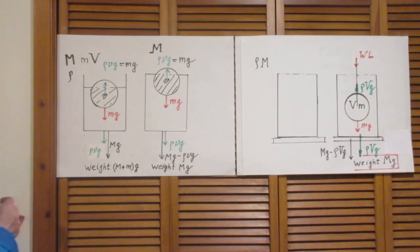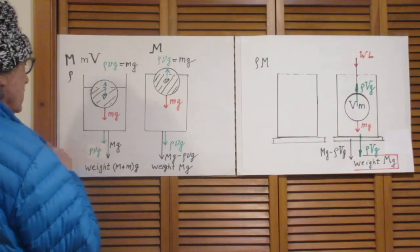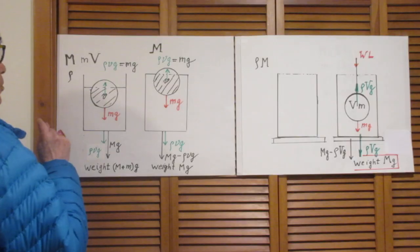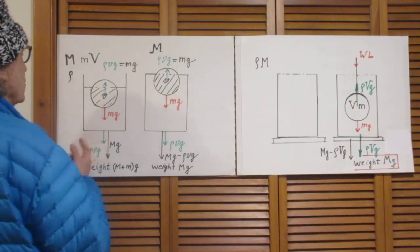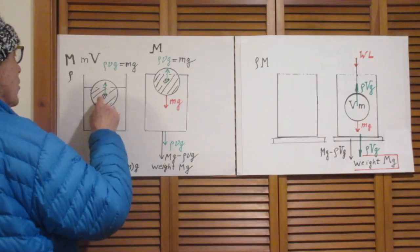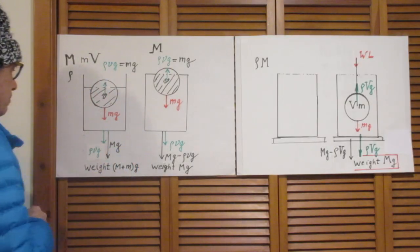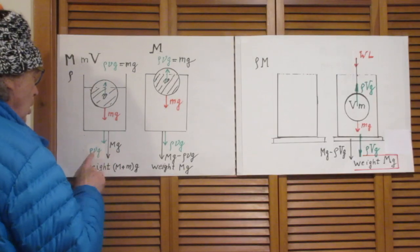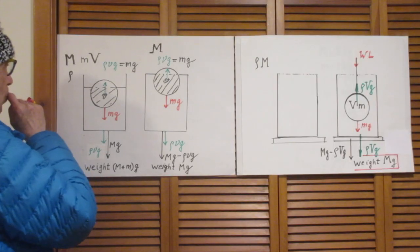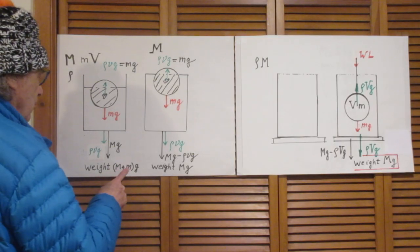Now I am asking the question: what will the bathroom scale indicate? There is a force down which is the container plus the liquid — the liquid hasn't changed — so that's Mg down. But now comes a key point that some of you may have overlooked. If the liquid exerts a buoyant force upwards on this object, according to Newton's third law the object must exert a force downwards in the opposite direction — action equals minus reaction — with the same magnitude. So the forces downwards that the scale will indicate is this capital Mg, but also ρvg, and that's mg. So the weight the bathroom scale will indicate is capital M plus little m times g.